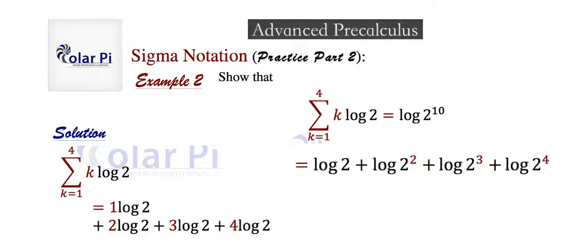So we start with the power rule. Using the power rule, we can rewrite this here as log 2 plus log 2 squared plus log 2 cubed plus log 2 to the fourth, and then in our next step, using the product rule, we can write this last guy in this manner. Going from this product to this sum and backwards is what's called the product rule for logs.